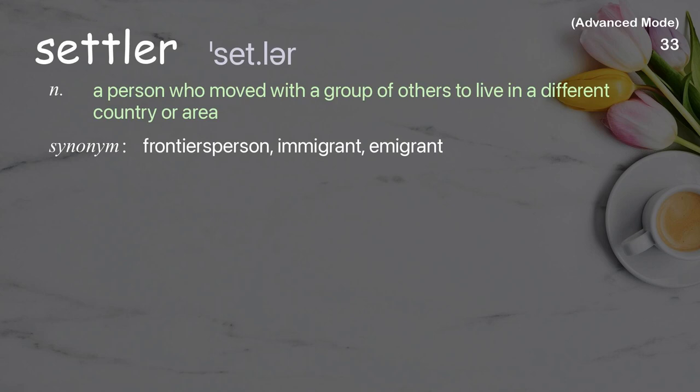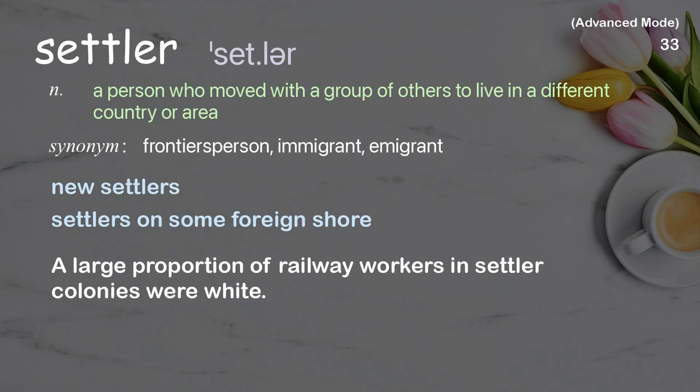Settler: A person who moved with a group of others to live in a different country or area. Examples: New settlers. Settlers on some foreign shore. A large proportion of railway workers in settler colonies were white.